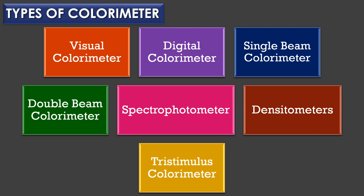Types of colorimeter: There are seven types of colorimeters. They are: visual colorimeter, digital colorimeter, single beam colorimeter, double beam colorimeter, spectrophotometer, densitometer, and finally tristimulus colorimeter.